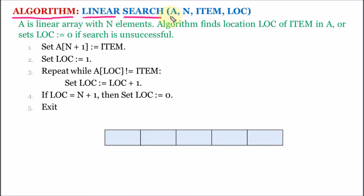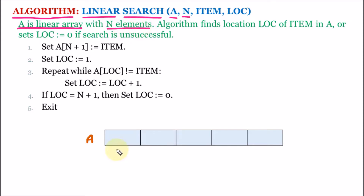Here we are having A. A is the linear array — so here we have taken the array whose name is A. A one-dimensional array is also called a linear array. Then we are having N, which signifies N elements. We are assuming that the array contains a few elements.